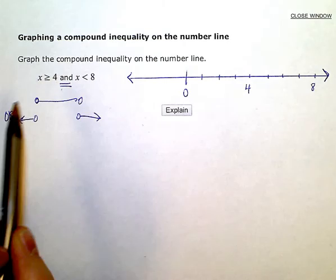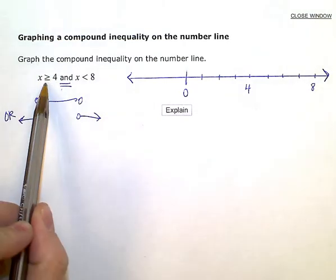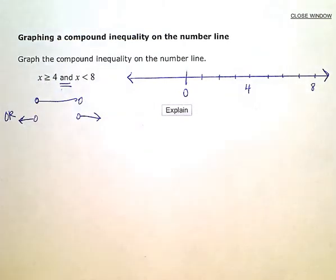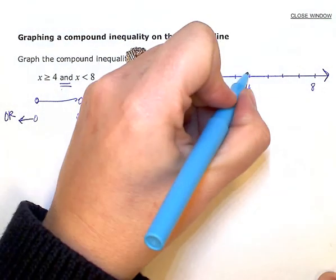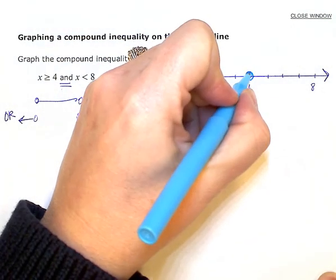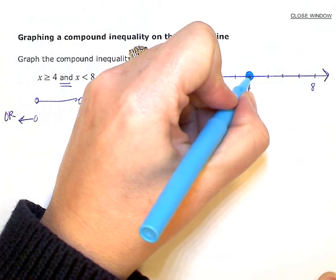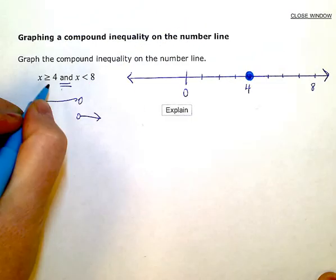Okay. So at four, since I have greater than or equal to here, I'm going to have a closed circle or a filled in circle. So at four, I'm going to put a circle and fill it in because of the equal to right there.